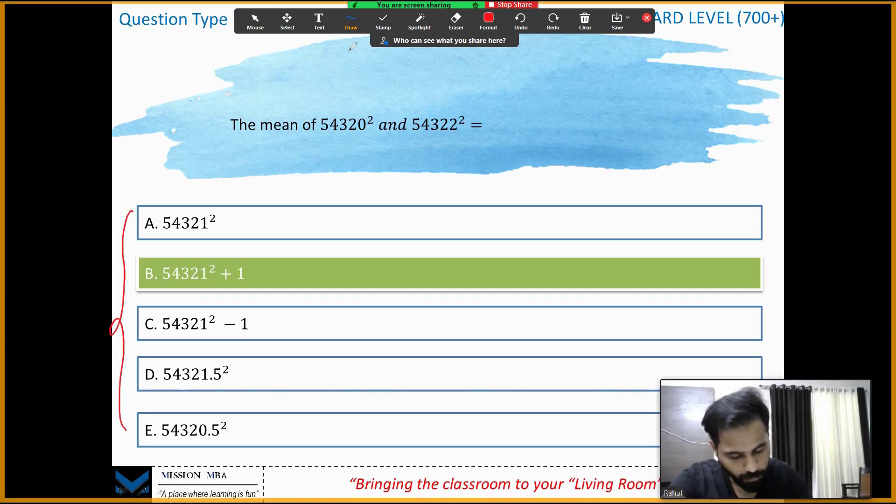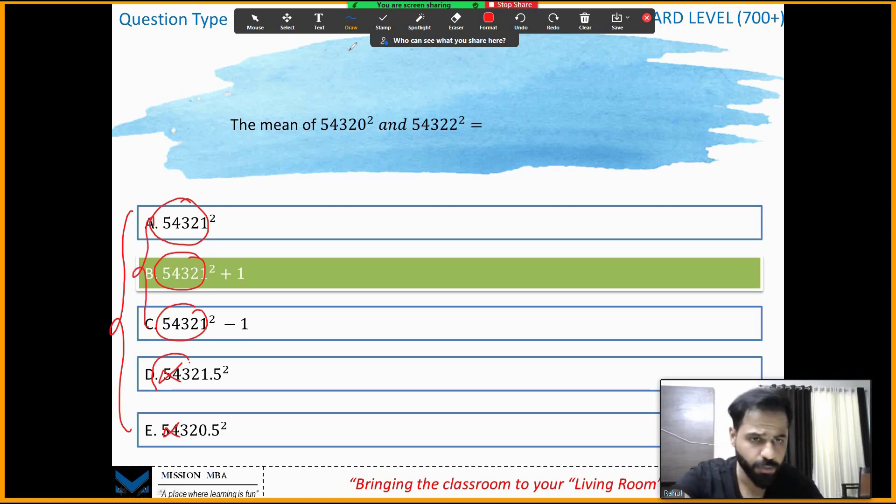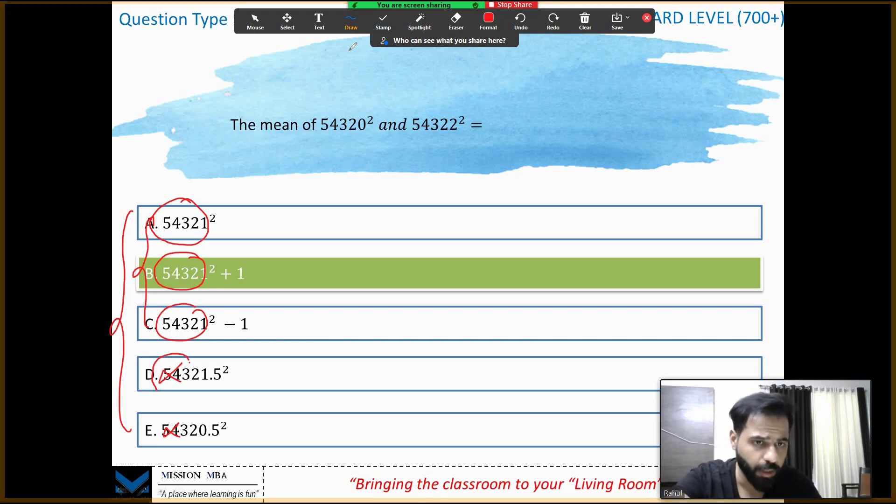It's not just about the question, look at the options. Each option had 54321, right? Forget about this one and this one, but three major options have 54321. It must have had something to do with 54321. That's all I thought, and I got to the answer and right approach. I hope you understood this.